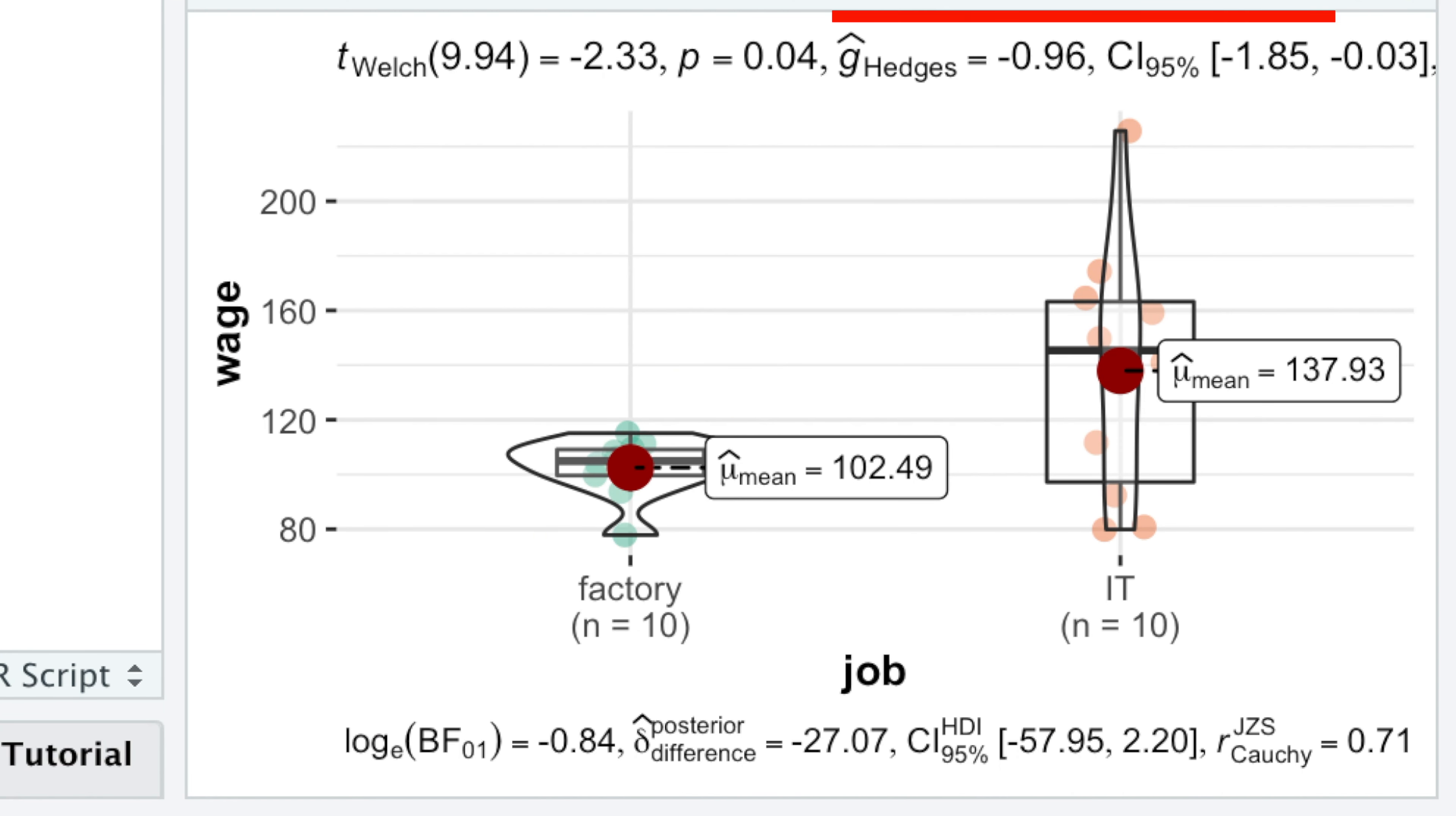Fortunately, ggBetweenStats provides Hedges g as the measure of the effect size, which shows how large the difference in salaries is.